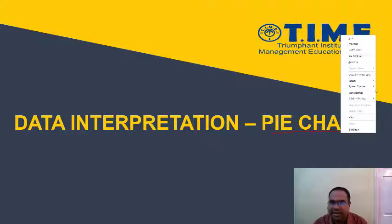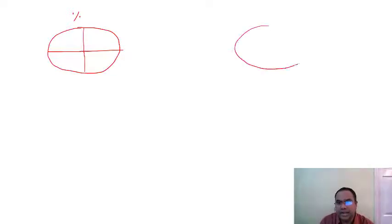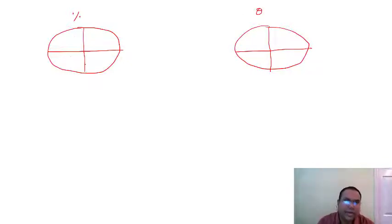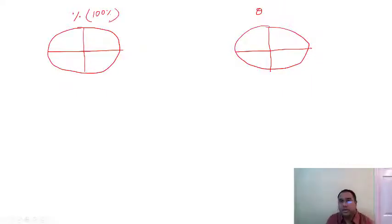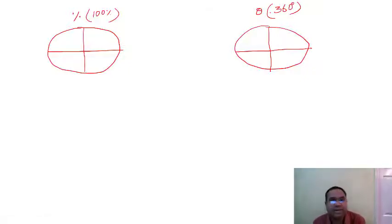Before we start discussing pie charts, let us take up a few basic concepts. The distribution in a pie chart can be given in percentage or in degrees. If it is given in percentage, you add all the breakups and it must be equal to 100%. If it is given in degrees, the complete circle is 360 degrees.